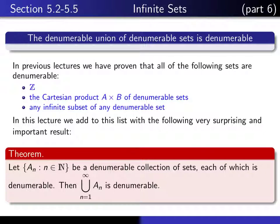The theorem starts with a collection of sets. So for each natural number n, we have another set a sub n. So that means a denumerable collection of sets, and each of the sets in the collection is assumed to be denumerable. Then the theorem asserts that if you take the union of all of those sets, then you merely get a denumerable set out of it.